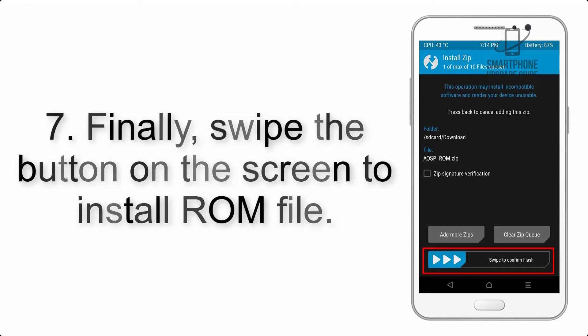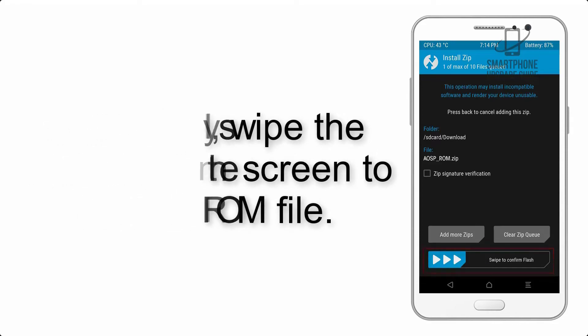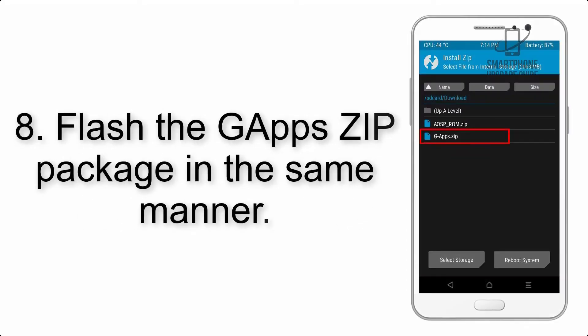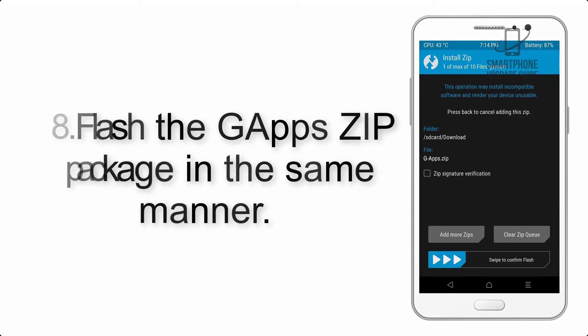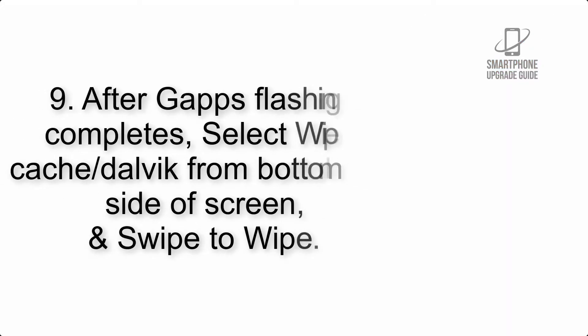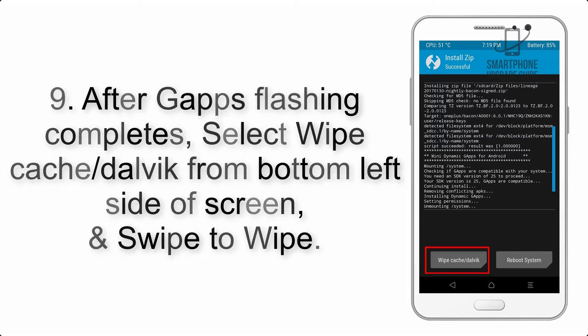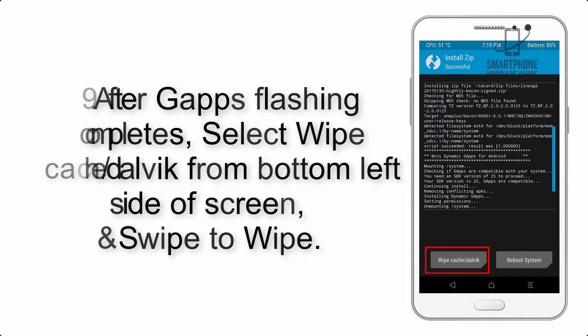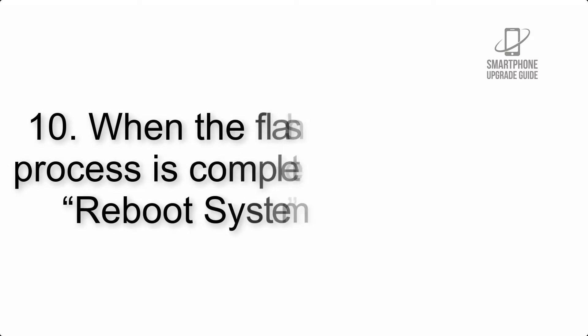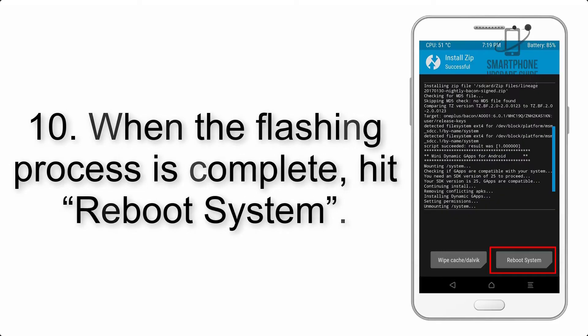Step 7: Swipe the button on the screen to install the ROM file. Step 8: Flash the G apps zip package in the same manner. Step 9: After G apps flashing completes, select Wipe Cache and Dalvik from the bottom left side of the screen and swipe to wipe.